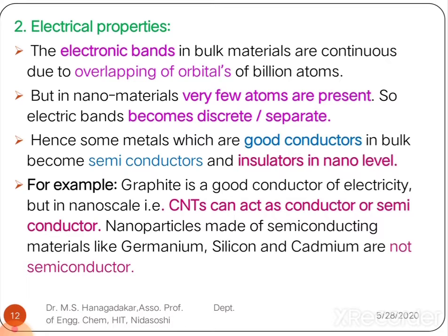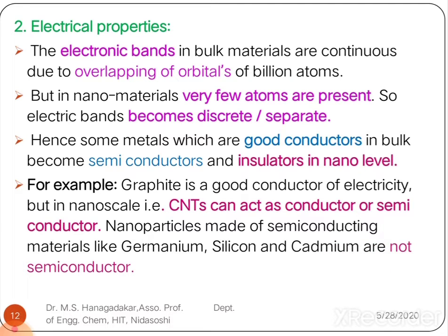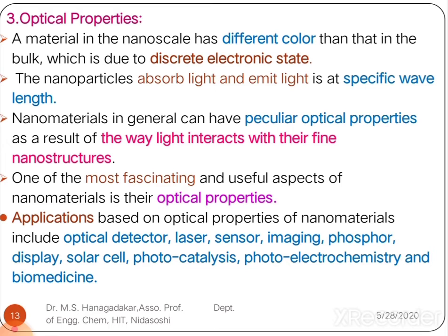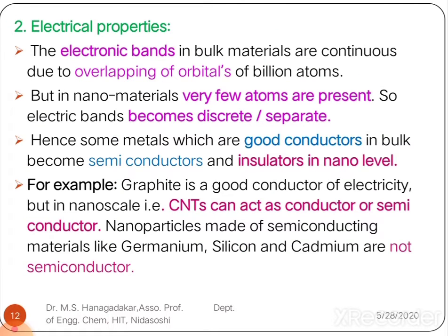Some nanoparticles made of semiconducting metals like germanium, silicon, and cadmium are not semiconductors when they have been converted to nanoparticles. This is about the electrical properties of nanoparticles, which are totally size-dependent.